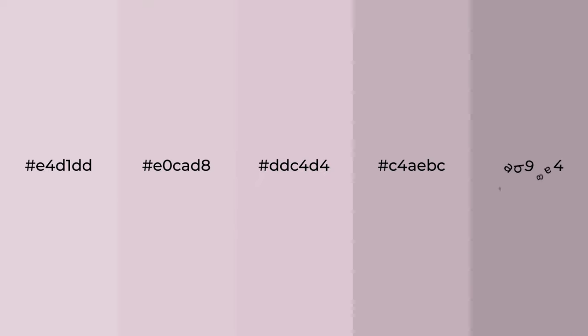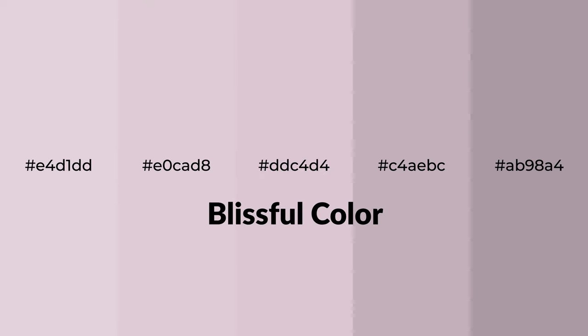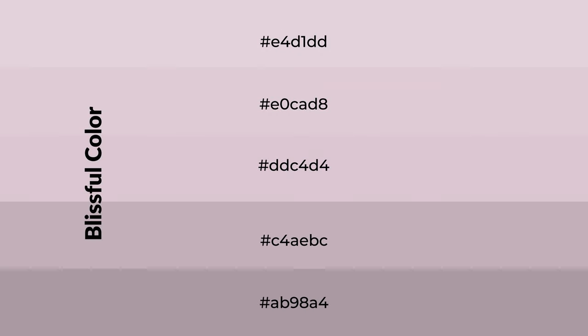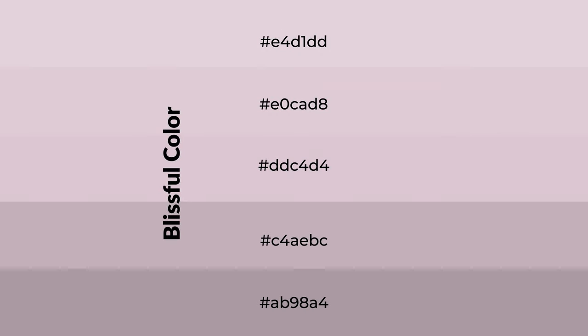Warm shades of blissful color with violet hue for your next project. To generate tints of a color, we add white to the color. Tints create light and exquisite emotions. To generate shades of a color, we add black to the color.